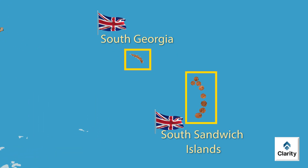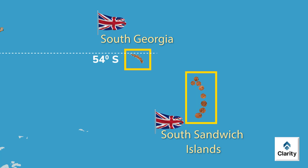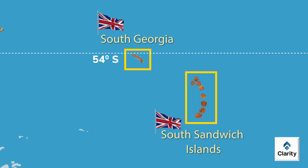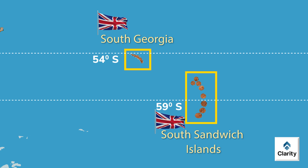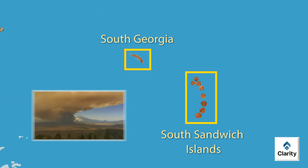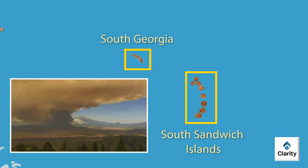South Georgia Island is around 54 degrees south latitude. The South Sandwich Islands extend further south up to 59 degrees latitude. The climate here is very harsh, with severe winters and heavy snowfall.